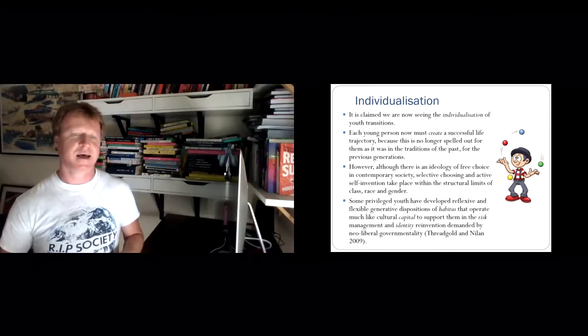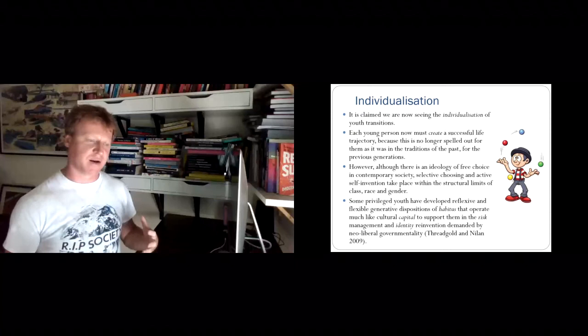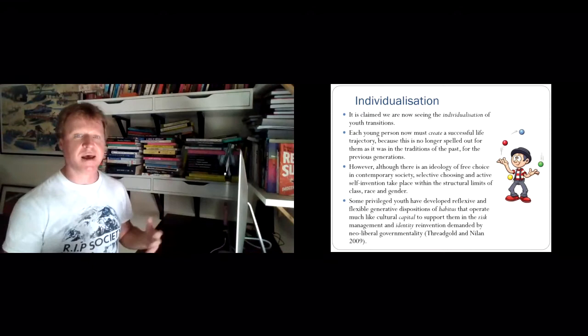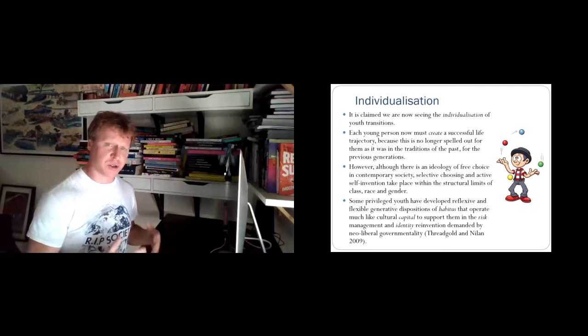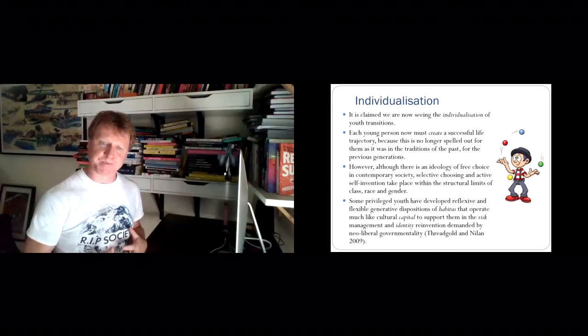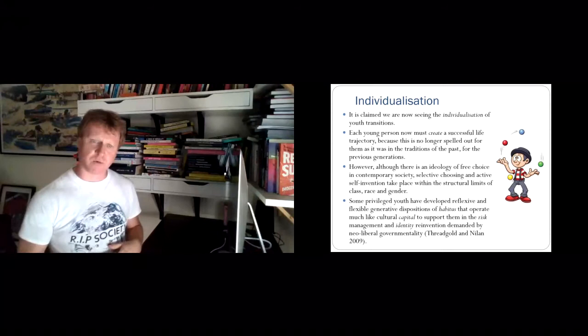One person will tell you to go do a nursing degree because there's jobs there. Another person might say don't do that, it's not very well paid, you should do something else. There's all these conflicting advice, and all we can do as individuals is take on that information, make choices the best we can, but we know there's a lot of precarity and anxiety involved in that. Who knows if we're right or not? That can lead to problems in the future. Making the right choice in all the choices we make creates pressure, and we live in this reflexive, anxious state. Some of the work I've done earlier on in this area talks about how class plays a real role in the dissemination of these risks as well.